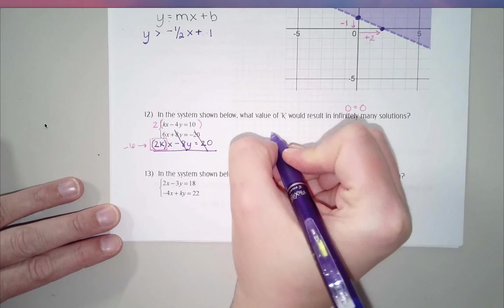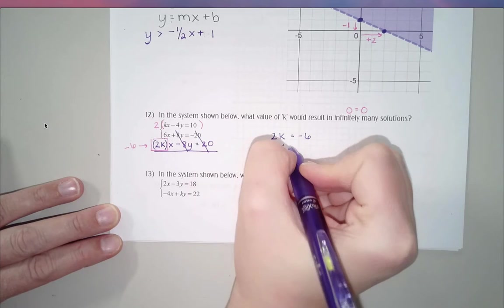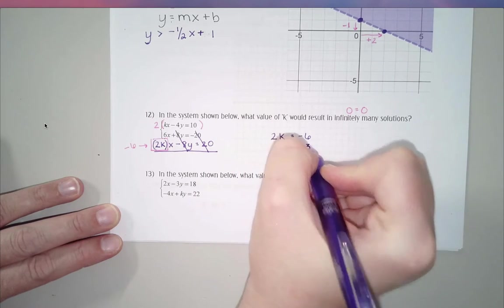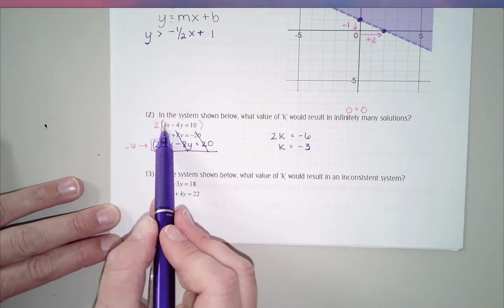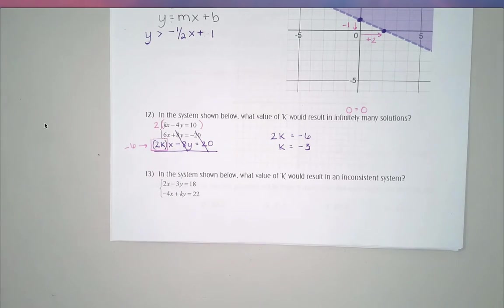Now look at what that top equation is going to look like: 2k times x minus 8y equals 20. So you'll notice that what I have set up now, my 20s are going to cancel, my 8y's are going to cancel. I need this to cancel with 6. And so really what I found out here is that what I would like to go in this spot right here is a negative 6. And so the question is just how do I get that to equal negative 6? Really what we're saying is 2 times k must be negative 6, so k must be negative 3.